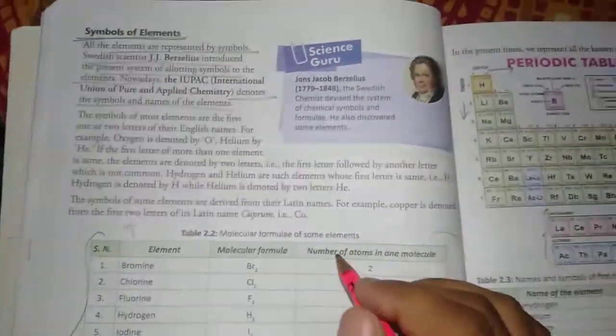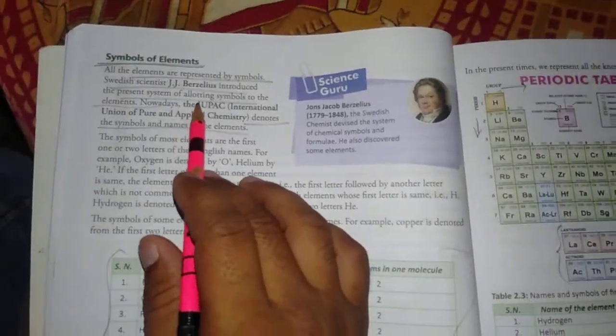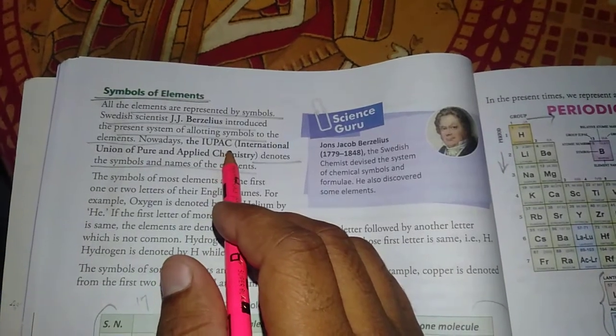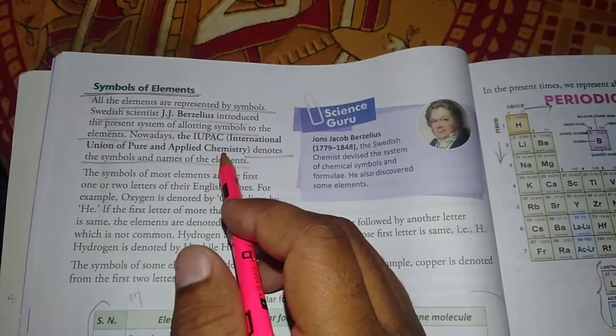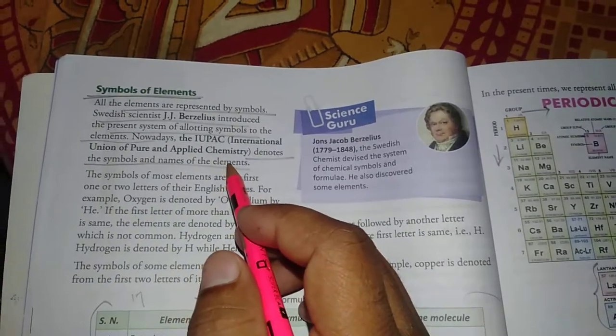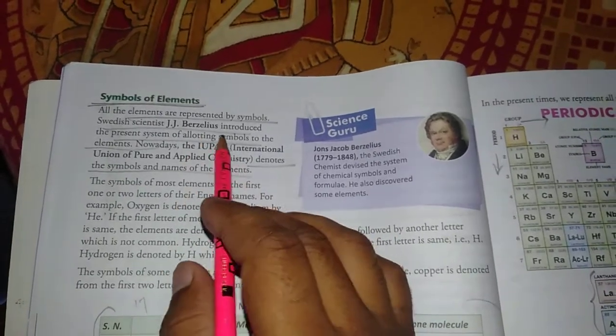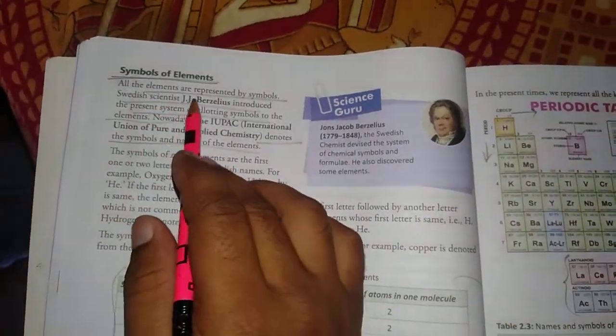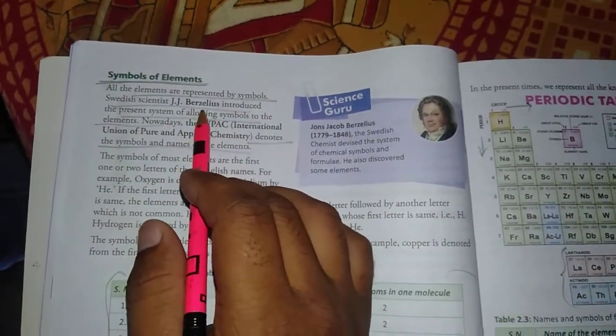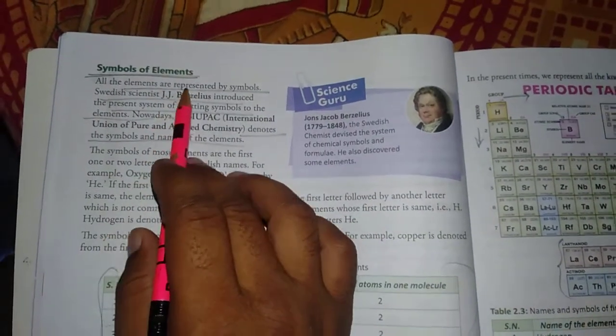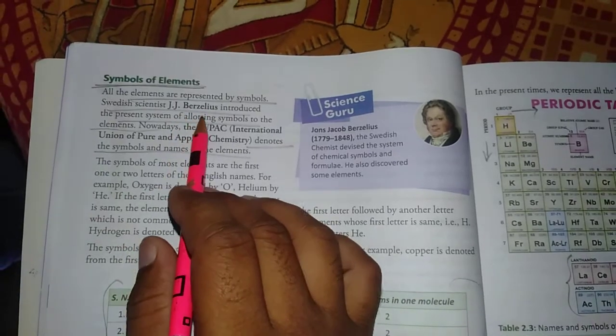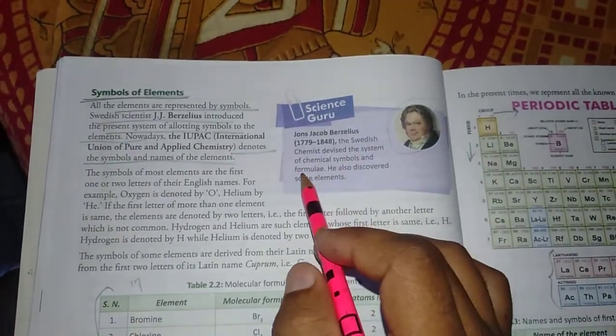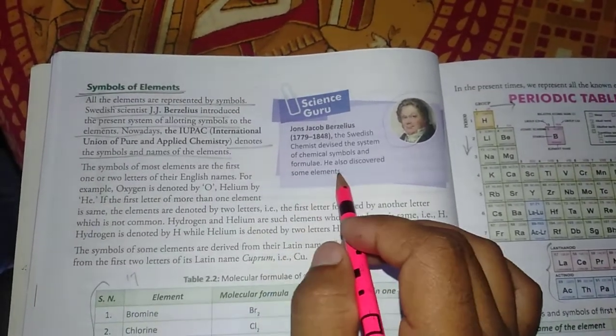Then we will talk about symbols. The first question is, why are symbols required? If you have a long name, it becomes difficult to remember. So symbols are required so that we can remember them in short form. The first person who created symbols was John Jacob Berzelius, a Swedish chemist who built this system and discovered some elements.